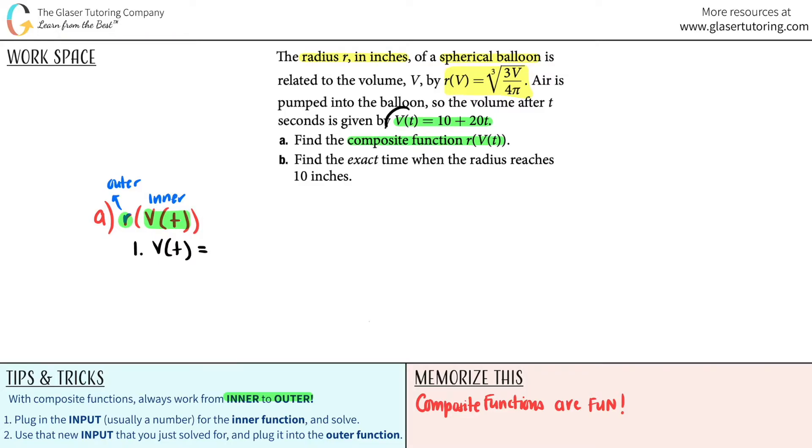And V of t, they told us, was this: 10 plus 20t. Can't do any solving there because we don't have an actual number for t.